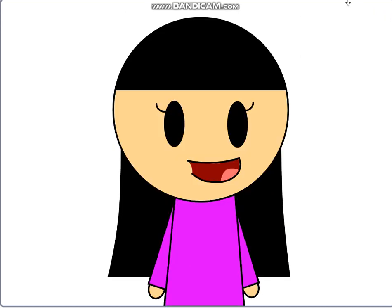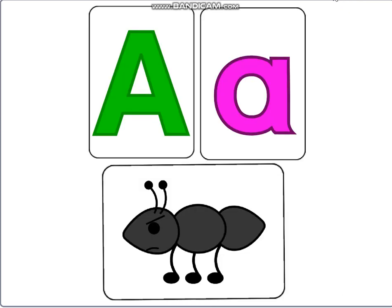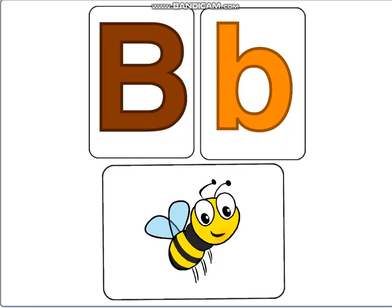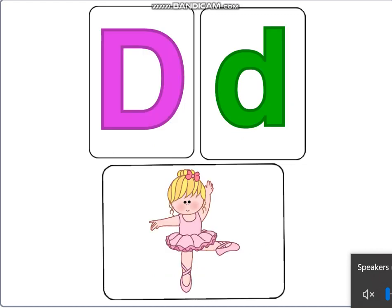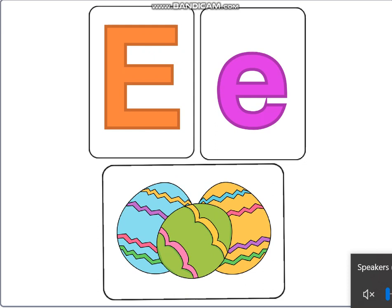Now you try it on your own. This time I'll say the letters, see if you can remember the words. A for Angry Ant. B for Busy Bee. C for Curly Crisp. D for Dancing Doll. E for Easter Egg.